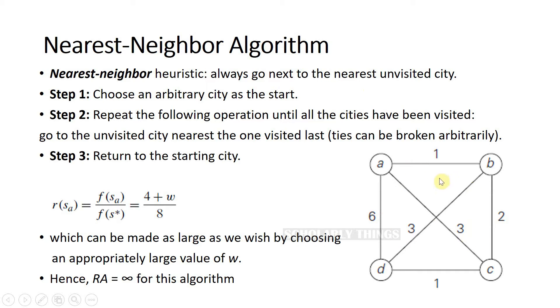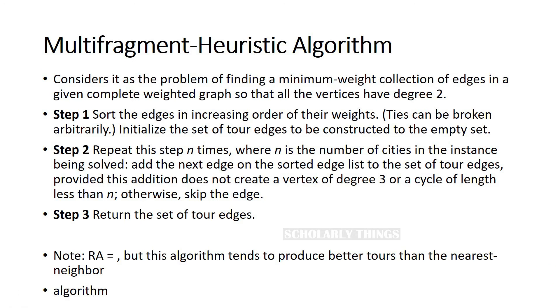In this example, if we apply this nearest neighbor algorithm, the path that the algorithm takes will be A-B-C-D-A. But note that this is not the optimal path. Optimal path would be A-B-D-C-A.